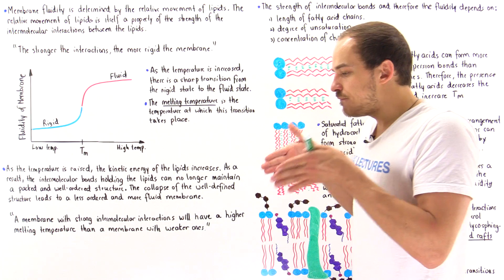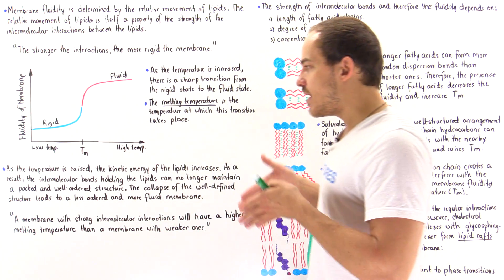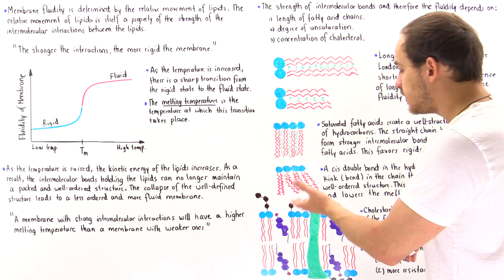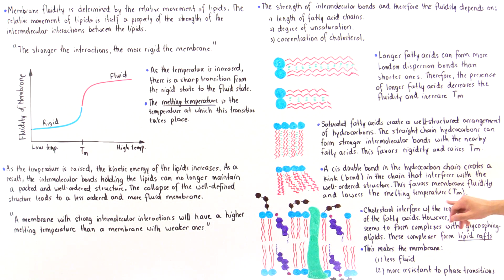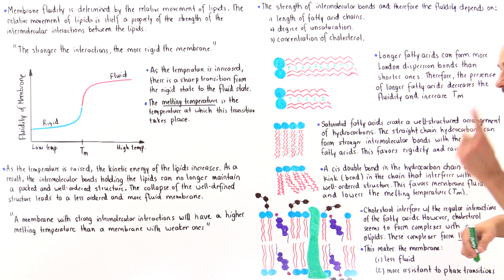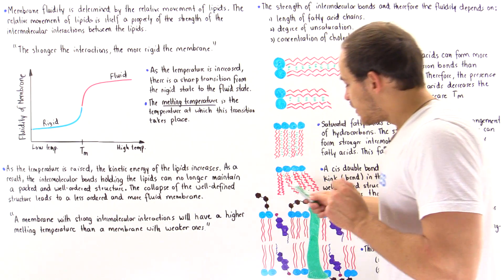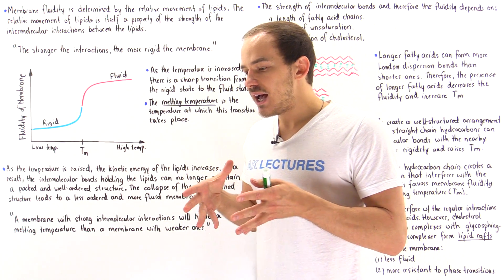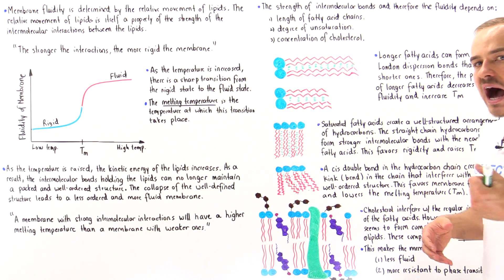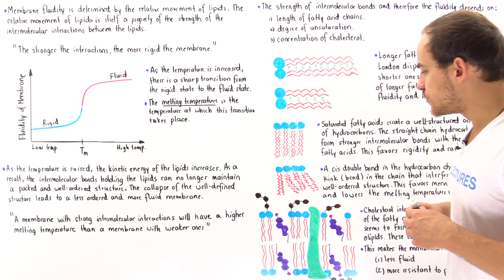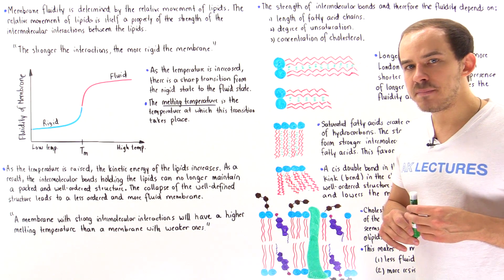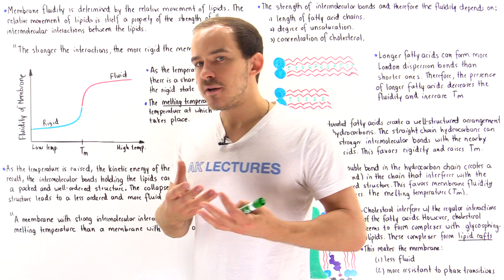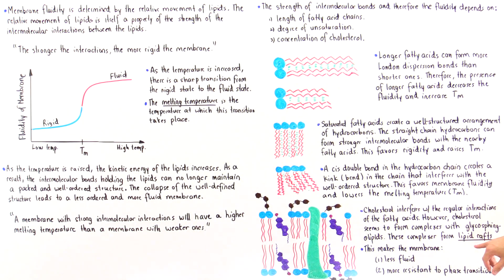When cholesterol fits into the structure of the membrane, it interferes with the regular interactions of fatty acids because of the difference in shape. However, cholesterol stimulates the formation of complexes between cholesterol molecules and glycophospholipid molecules, and these complexes are responsible for forming important structures called lipid rafts.